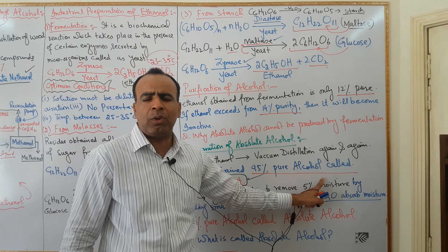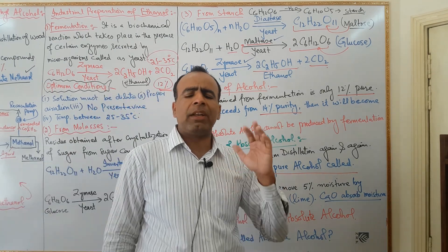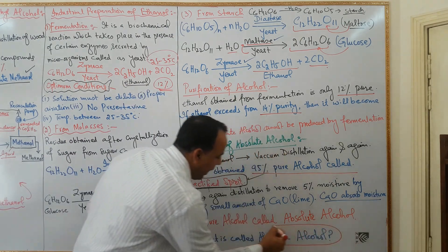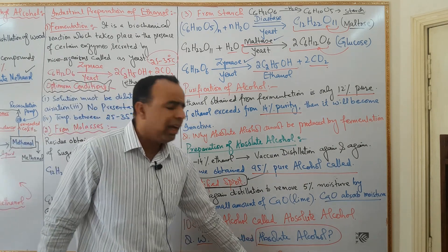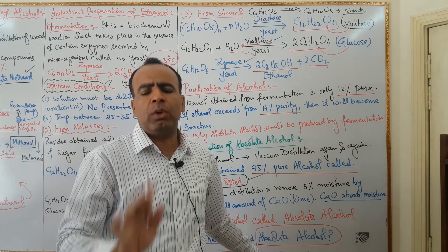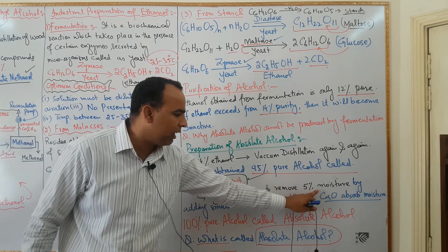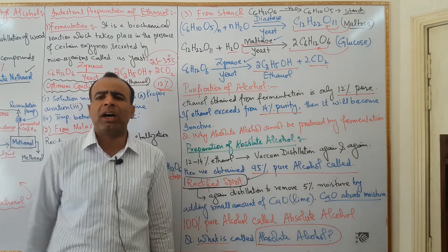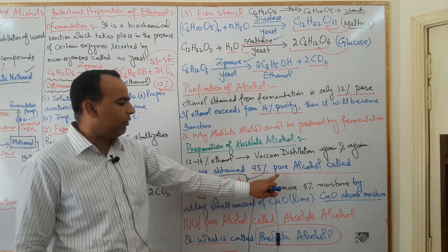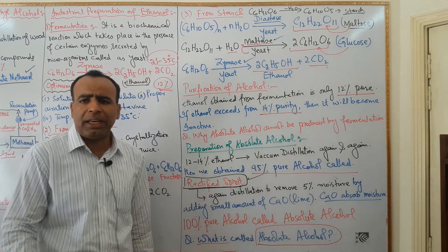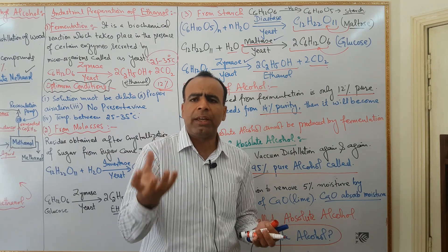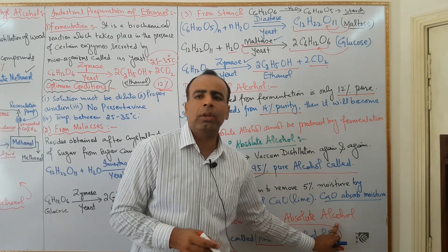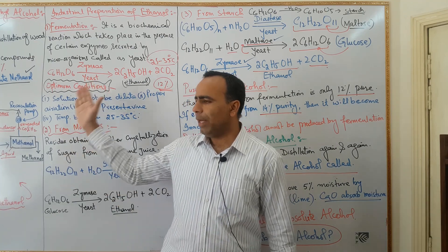Now we are going to prepare 100 percent pure absolute alcohol. Absolute alcohol is 100 percent pure ethanol. To remove the remaining 5 percent moisture, we add a small amount of lime — calcium oxide (CaO) — to the rectified spirit. The lime absorbs all the moisture, and in this way we get 100 percent pure ethanol, which is called absolute alcohol.